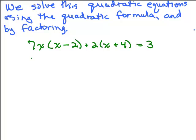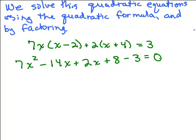We need to use the distributive property: 7X times X is 7X squared, minus 7X times 2 is 14X, plus 2X plus 8. We'll subtract 3 from both sides so it equals 0. Combining like terms, we get 7X squared minus 12X plus 5 equals 0.